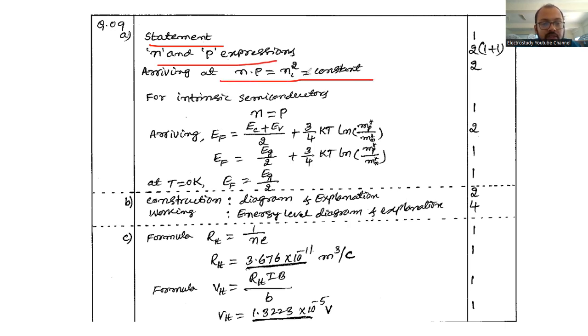n into p is equal to n_i square, that is equal to constant. For intrinsic semiconductor, n will be equal to p. So you can derive this particular expression. Ultimately at 0 Kelvin, E_F will be equal to Fermi energy level is equal to E_G divided by 2. So that is the expression you will be getting. Surely you can expect similar kind of question in the forthcoming examination.